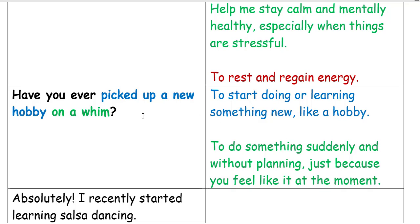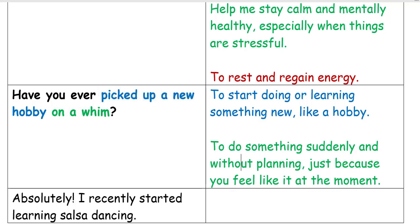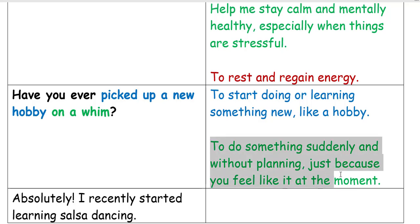The phrase 'on a whim' means to do something suddenly and without planning, just because you feel like it at the moment. For example, all of a sudden you decide to go rock climbing and then start doing it on a regular basis because you enjoy it.